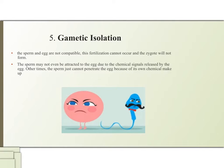The last type covered in this video is genetic isolation. The sperm and egg are not compatible, so fertilization cannot occur and a zygote will not form. The sperm may not even be attracted to the egg due to chemical signals released by the egg, or the sperm simply cannot penetrate the egg because of its own chemical makeup.